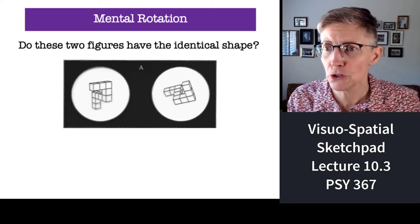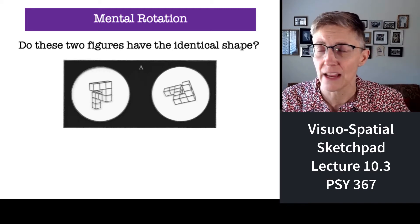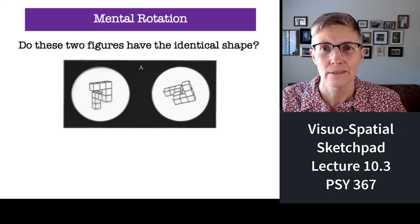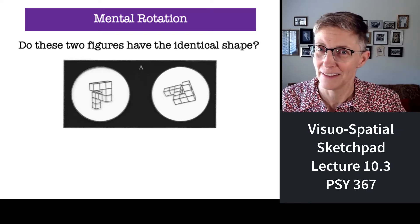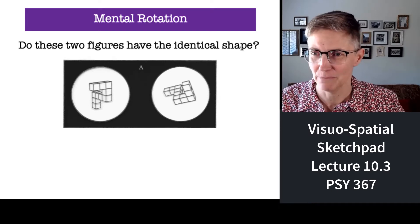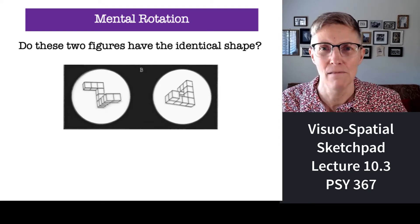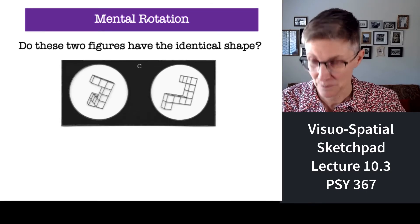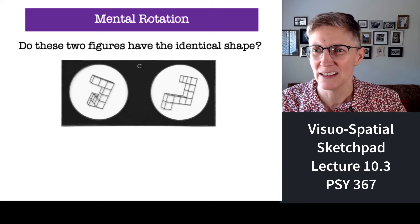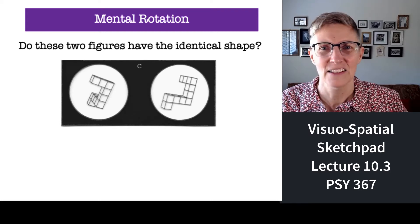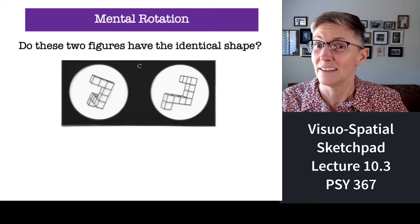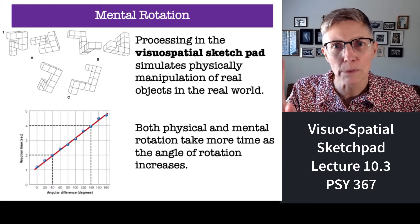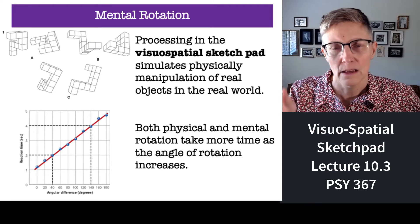Look at these two shapes quickly and say, are they the same shape or two different shapes? Same? Okay. How about these two shapes — same or different? Same. Good. And these two shapes — same or different? Different. In your head, you are capable of rotating objects around.